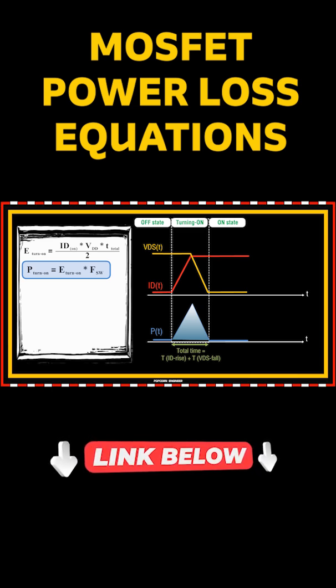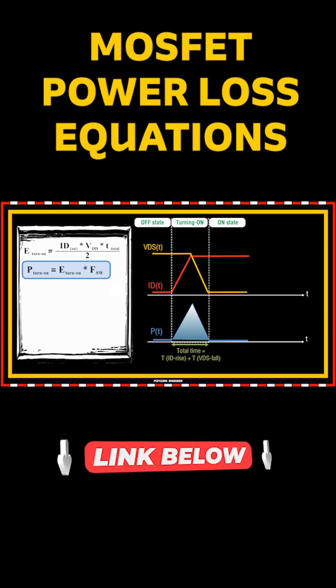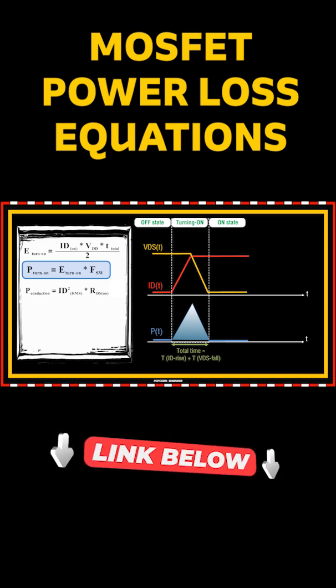When a MOSFET is on and conducting, the path between drain and source has a small resistance called RDS_on. So the power loss here is just like in any resistor: I squared R.